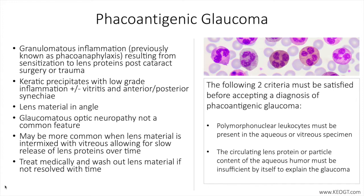The following two criteria must be satisfied before definitively accepting a diagnosis of phacoantigenic glaucoma. First, polymorphonuclear leukocytes must be present in the aqueous or vitreous specimen. Second, circulating lens proteins or particle content of the aqueous humor must be insufficient by itself to explain the glaucoma. Sending aqueous taps for analysis is not common and the diagnosis is often not definitively made prior to interventions being instituted.